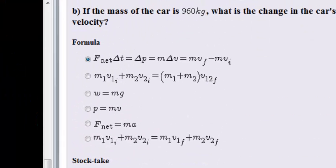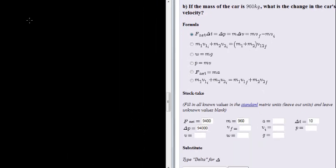In the next question, we are asked that if the mass of the car is 960 kilograms, what is the change in the car's velocity. So now we have all of the information that we had before, but you'll notice that the formula where we want change in velocity, we only need the change in the momentum, in other words the impulse, and the mass.